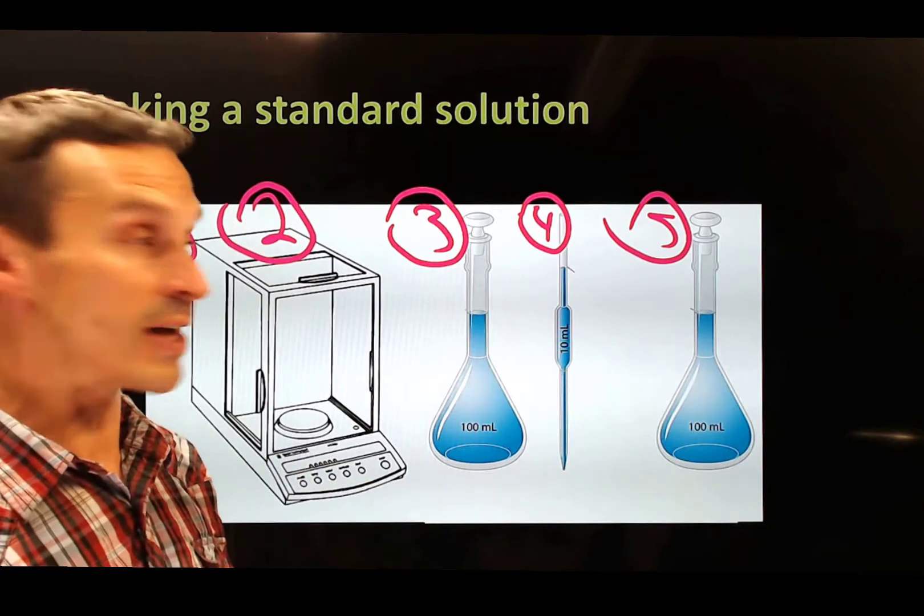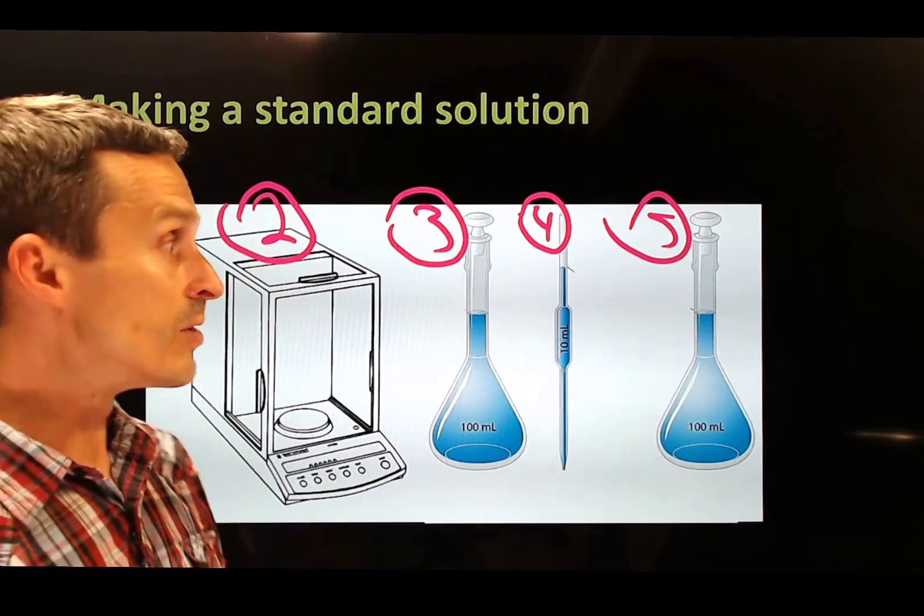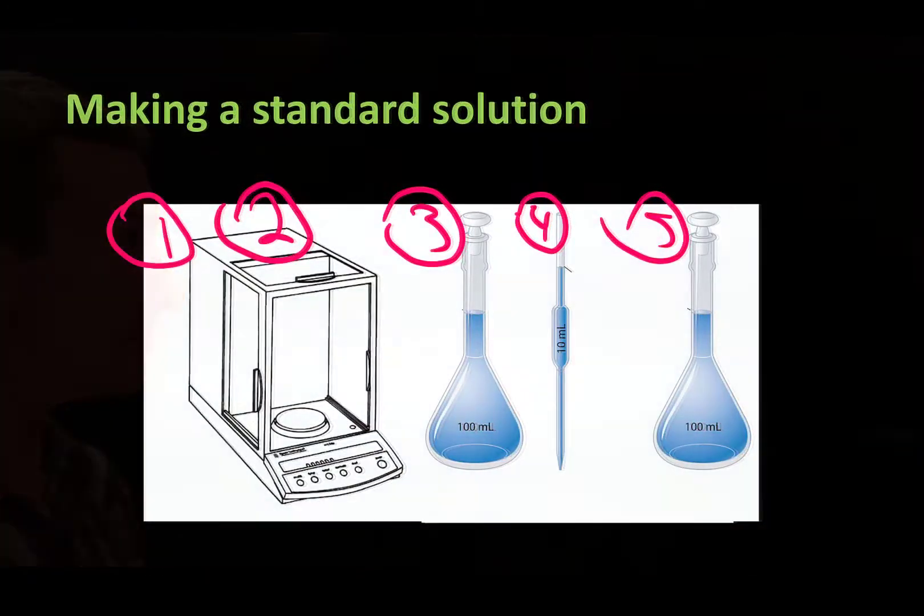And finally our second volumetric flask is going to be completely different than this. It doesn't have to be the same volume either. So there'll be error with that as well. So let's just come up with some numbers here. This is all the data that we've collected by being able to make up one of the standards in our calibration curve.